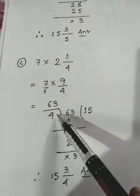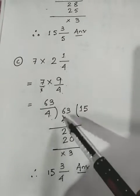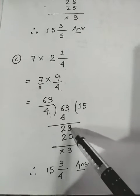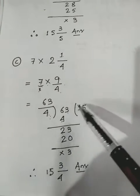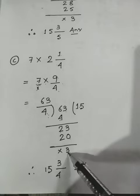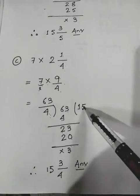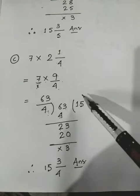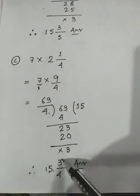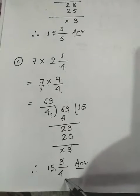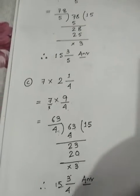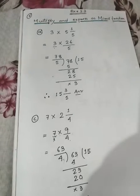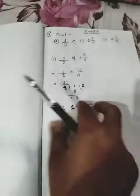Now divide 63 by 4 to give the answer in mixed fraction form: 4 × 15 = 60, remainder is 3, quotient is 15, divisor is 4. The answer is quotient remainder upon divisor, so 15 3/4.